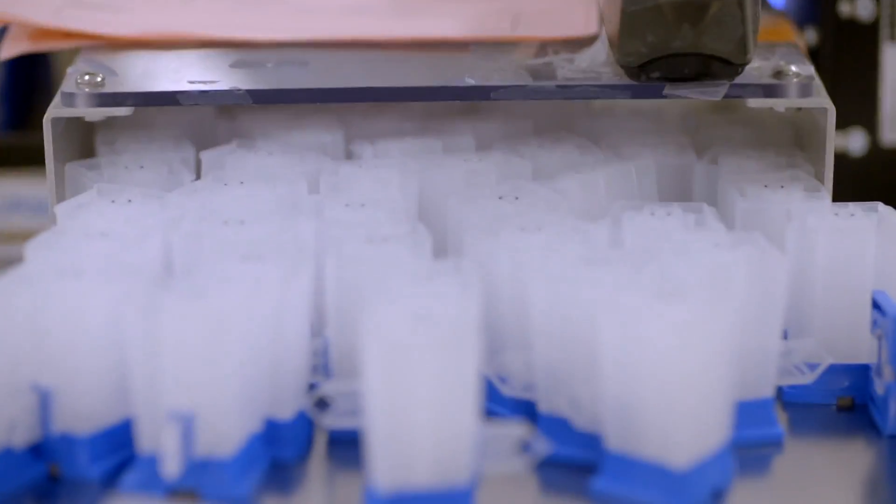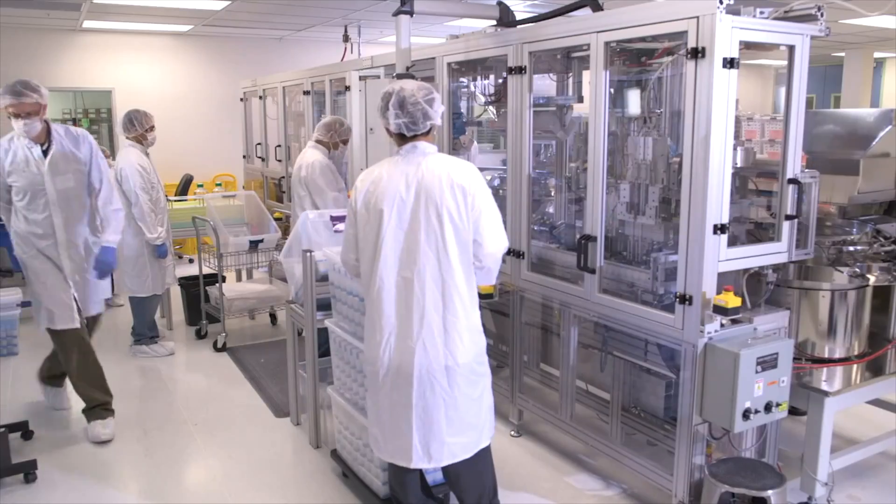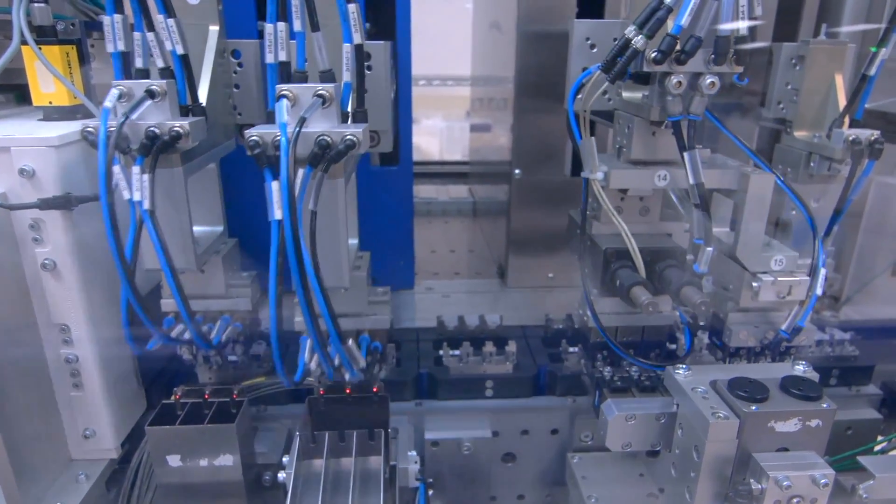The empty cartridge bodies are sent to our production facility in Sunnyvale, where they are filled on an automated line called ROBL, which stands for Reagents On Board Automated Line.